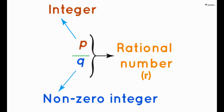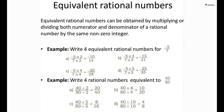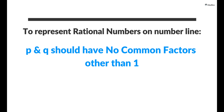A number R is called a rational number if it can be written in the form P by Q. What are P and Q? Here P and Q are integers and Q is not equal to 0. Why do we insist that Q is not equal to 0? That's because anything divided by 0 is not defined. Now, these rational numbers do not have a unique representation in the form of P by Q. For example, you can represent minus 5 by 7 as minus 10 by 14 or minus 15 by 21 and so on. These are equivalent rational numbers or fractions. So, when we represent a rational number on the number line, we assume that Q is not equal to 0 and that P and Q have no common factors other than 1.